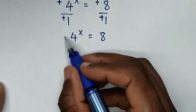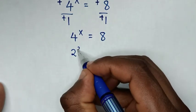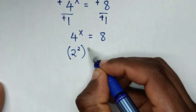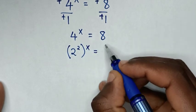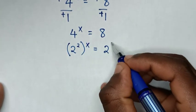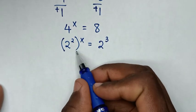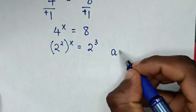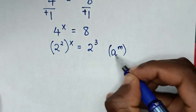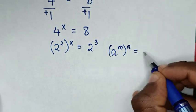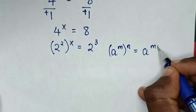Then in the next step, this 4 is same as 2 square, then bracket power x is equal to 8 is same as 2 power 3. Then from here, 2 square bracket power x is in the form of a m bracket power n is equal to a power m n.